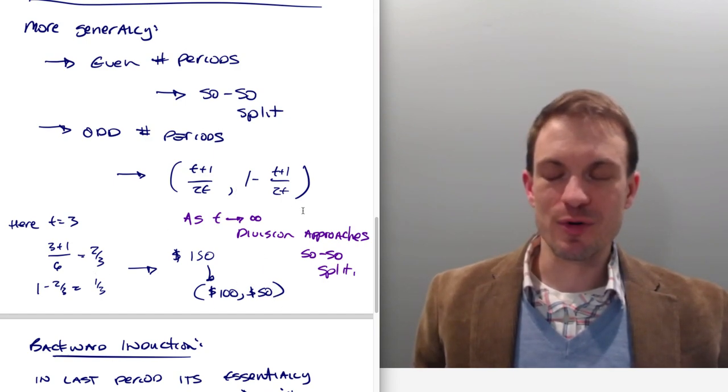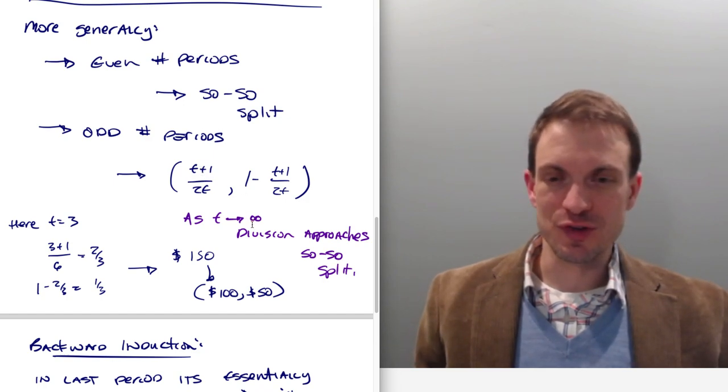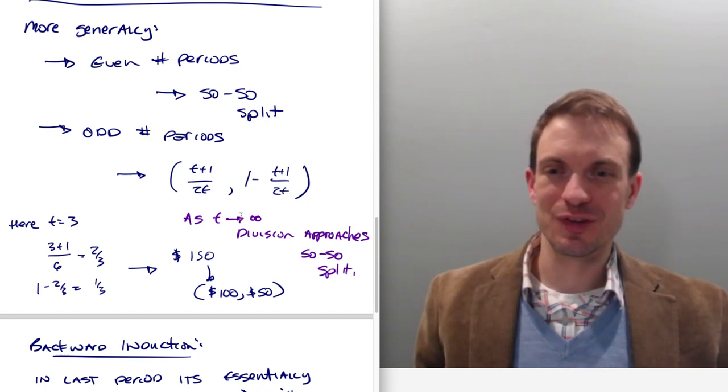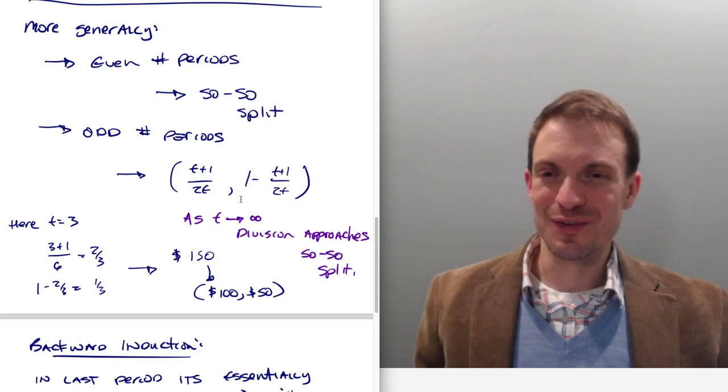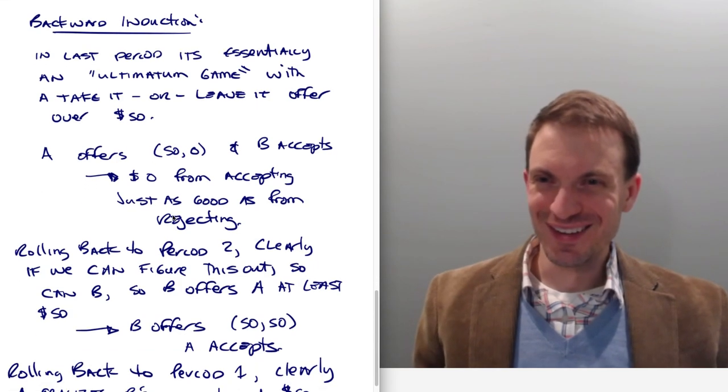However, if the number of periods expanded, like suppose the number of periods was like 50, then you end up having something that's going to get much closer to a 50-50 split, or suppose you have 1000 periods. So you can think about, think back to calculus, think about what happens as this tends to infinity, you can do L'Hopital's rule or whatever. So anyway.